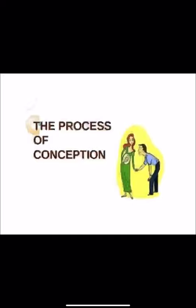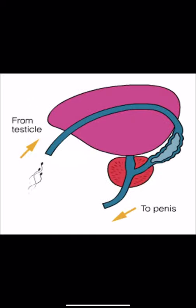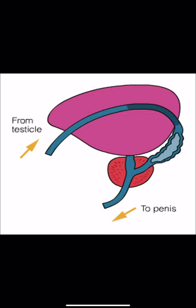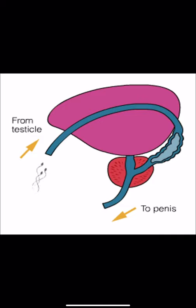Regarding the requirements for conception, on the male side there are three important steps: number one, sperm production or synthesis, which occurs in the testes under the influence of the hypothalamus and pituitary gland; number two, sperm transport, which occurs through multiple channels in the testes to the main ejaculatory duct; and number three, sperm deposition, which includes the process of coitus and timing in relation to the time of ovulation.